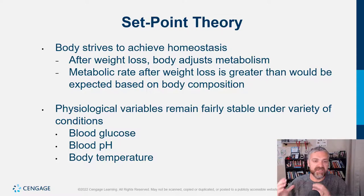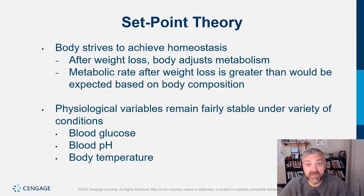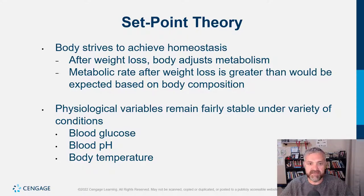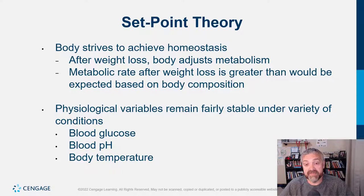The set point and settling point says your body will fight to defend these numbers — it may not be a number you want. You may want to weigh 200 pounds, but your body may want you to weigh 230. Physiological variables like blood glucose, blood pH, and body temperature remain fairly stable — body weight is one of those things your body tries to maintain. From an evolutionary standpoint, weight loss is not good — food was hard to come by, so your body defends against starvation whenever it senses that threat, and you can't convince your subconscious brain you're losing weight on purpose.